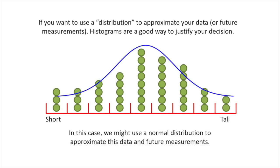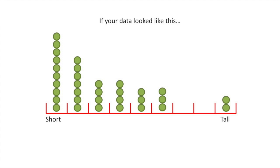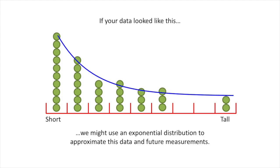In this case, we might use a normal distribution to approximate the data and future measurements. If the data look like this, we might use an exponential distribution to approximate this data and future measurements.